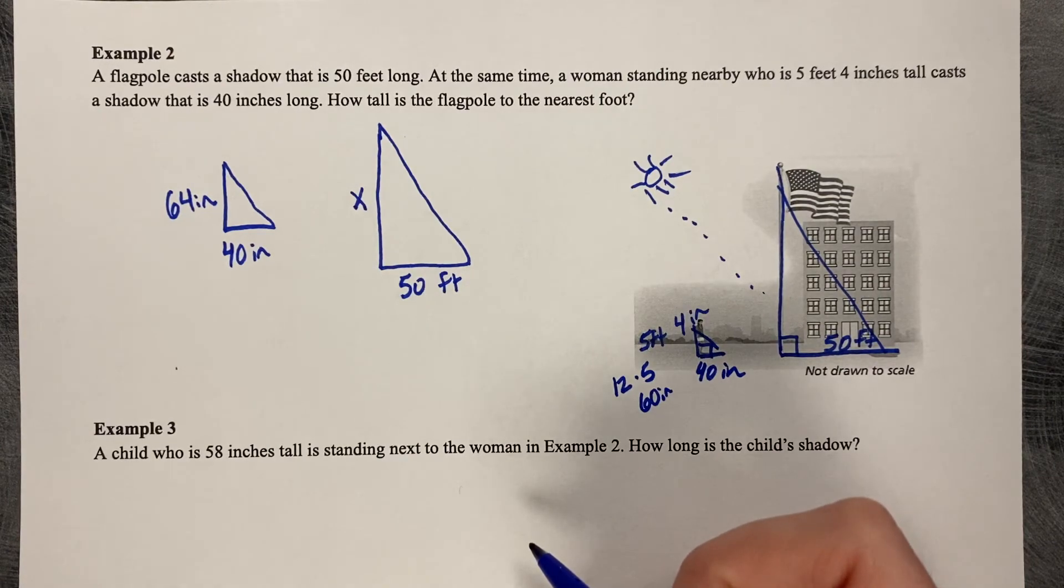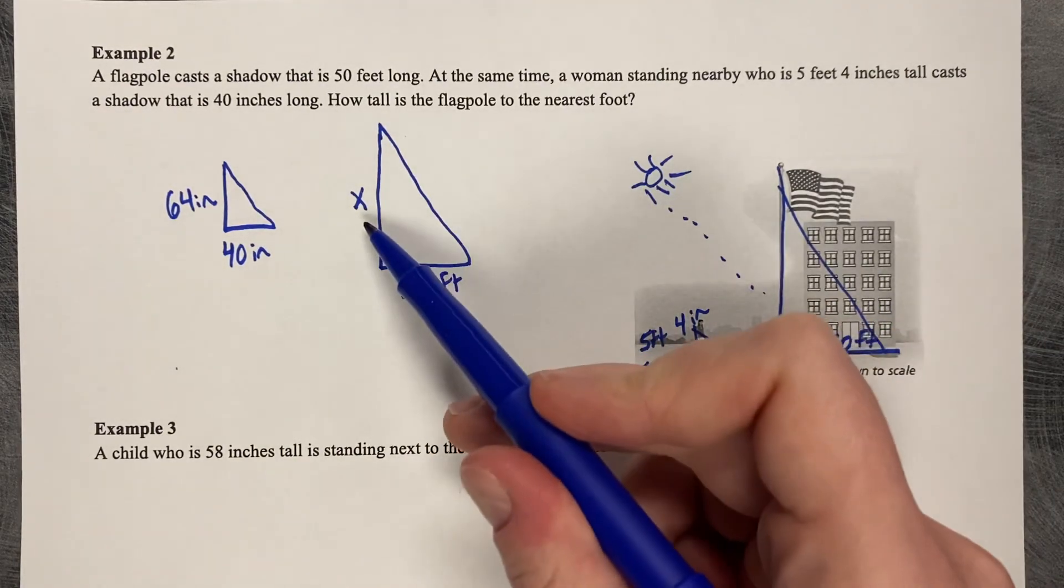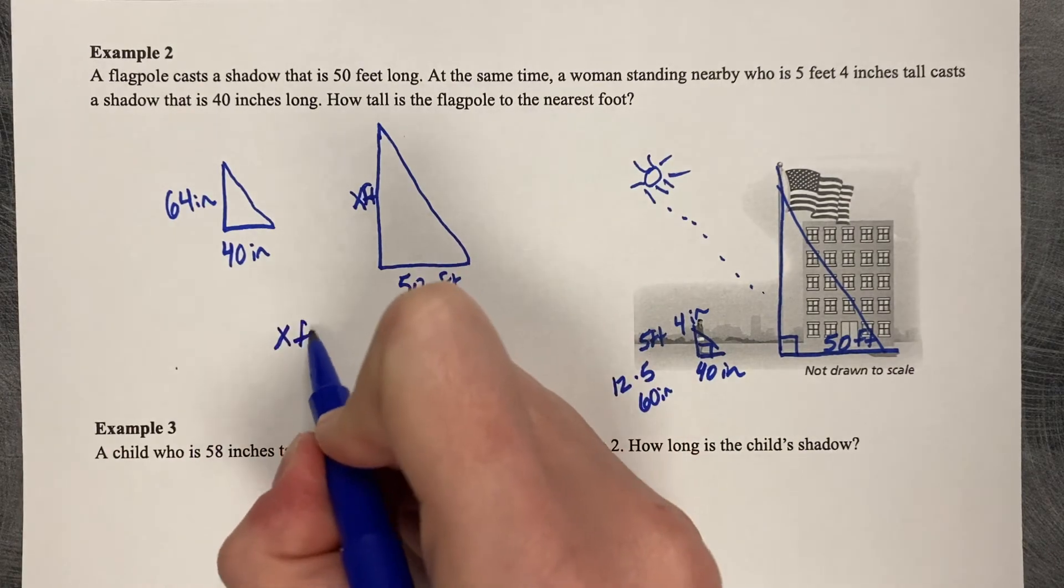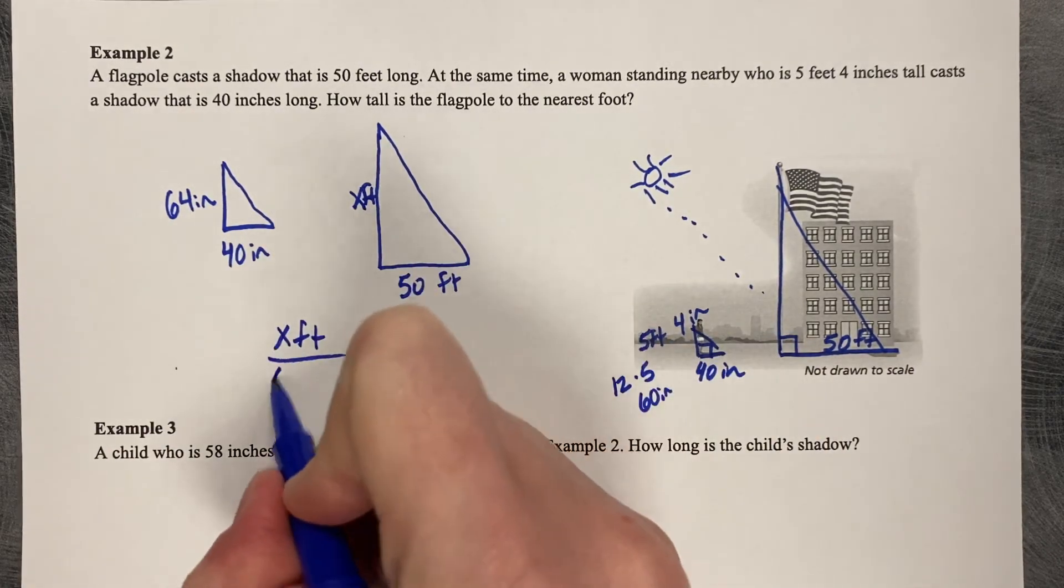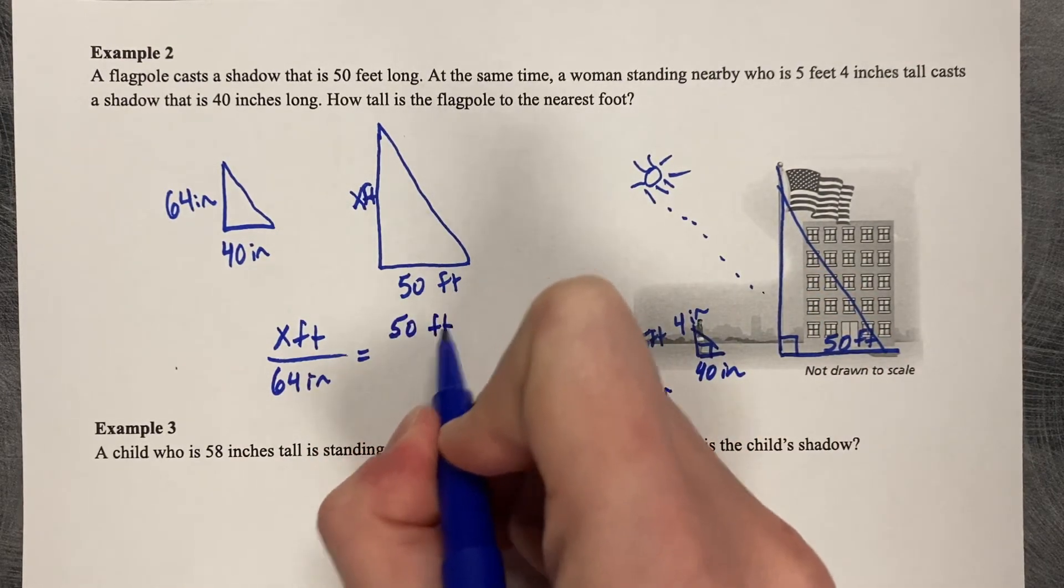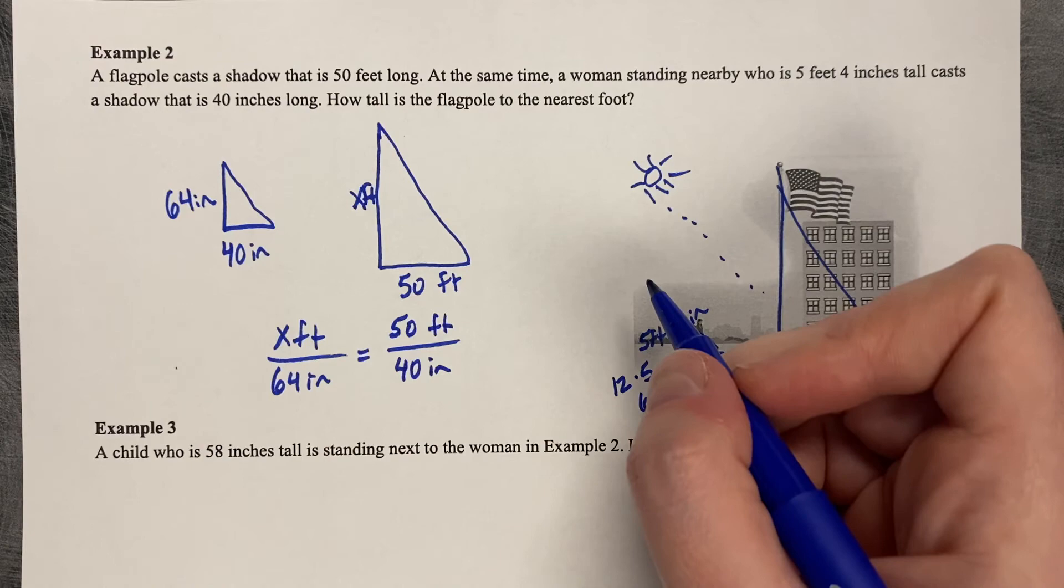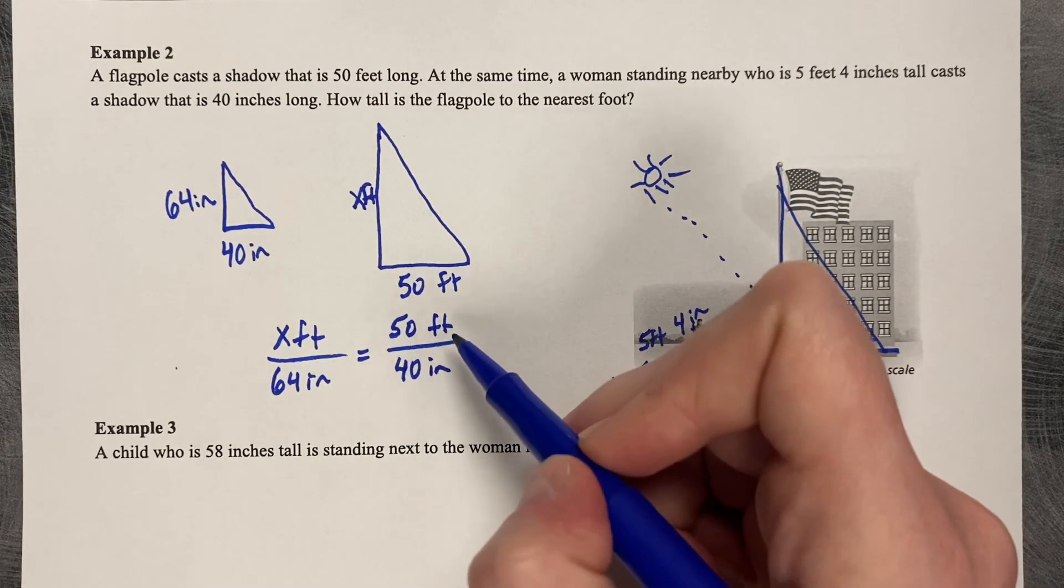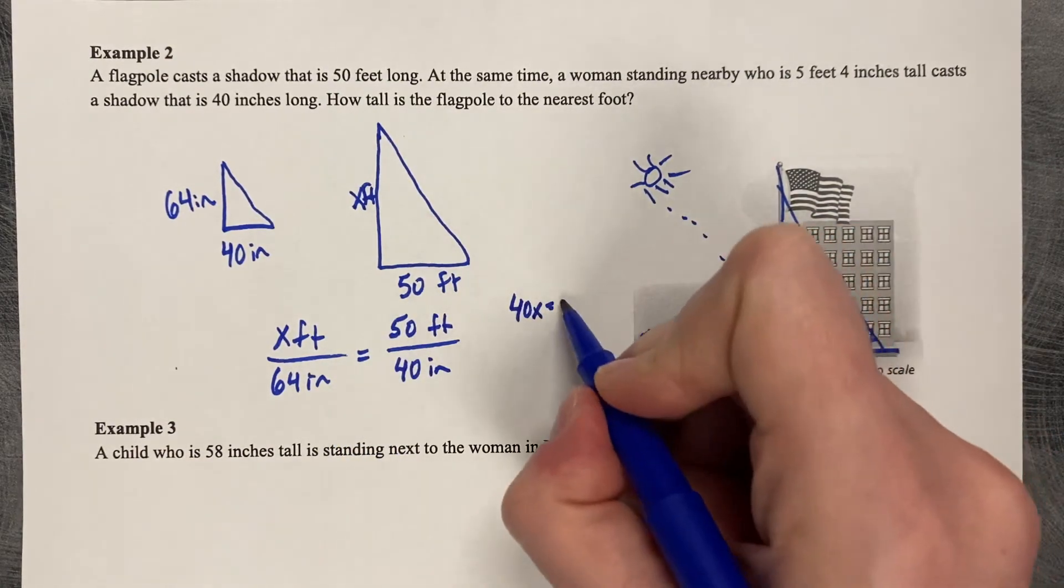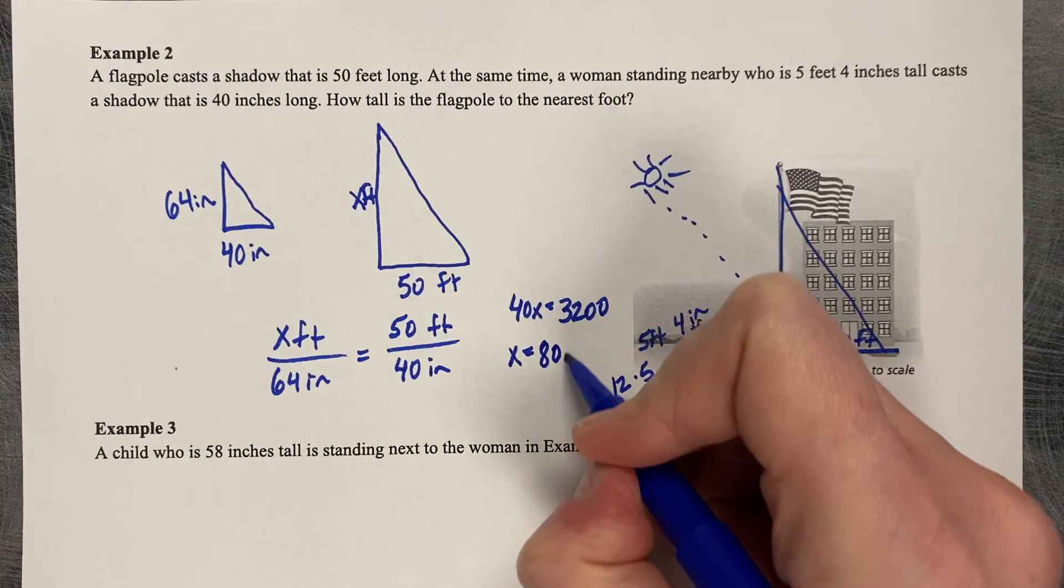So now the cool part about this is that you don't need to convert these feet into inches because this entire figure about the flagpole is going to be in feet. So when you set up your proportion, it's going to match. So we can say X feet compared to 64 inches is proportionate to 50 feet compared to 40 inches. And you can leave the units off. So X times 40 is 40X. 50 times 64 is 3,200. Divide by 40 and we get the flagpole to be 80 feet tall.